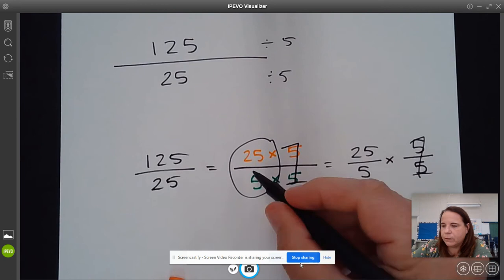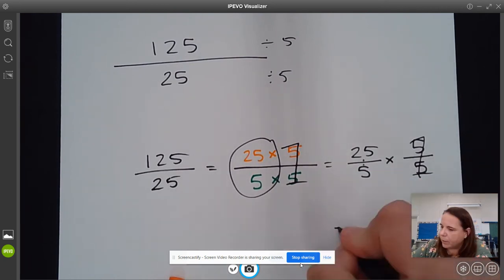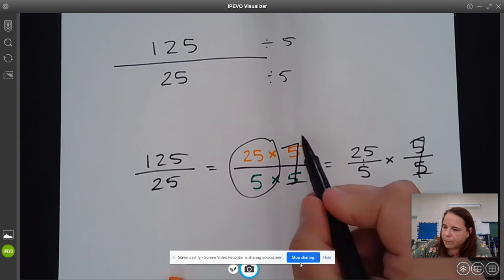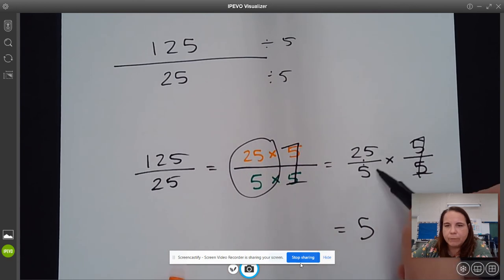And so what you're left with is just 25 over 5. And then you can divide those two numbers and find out that equals 5. So you can factor out that 5 and then just divide the remaining values.